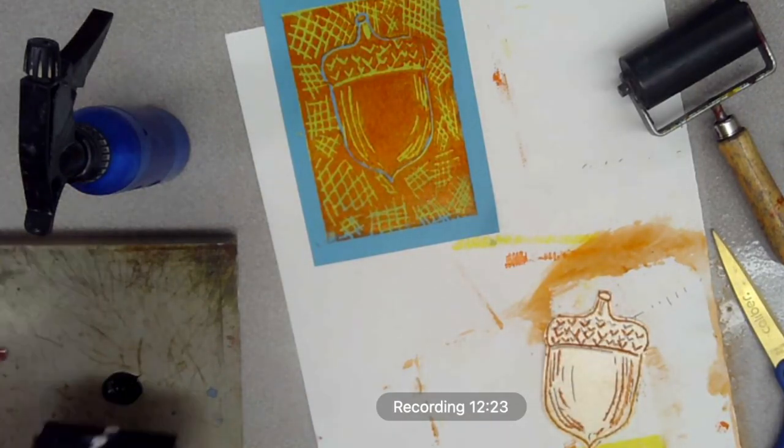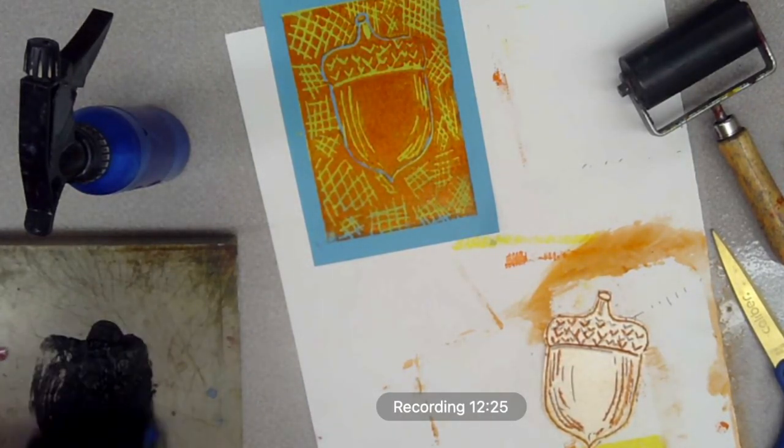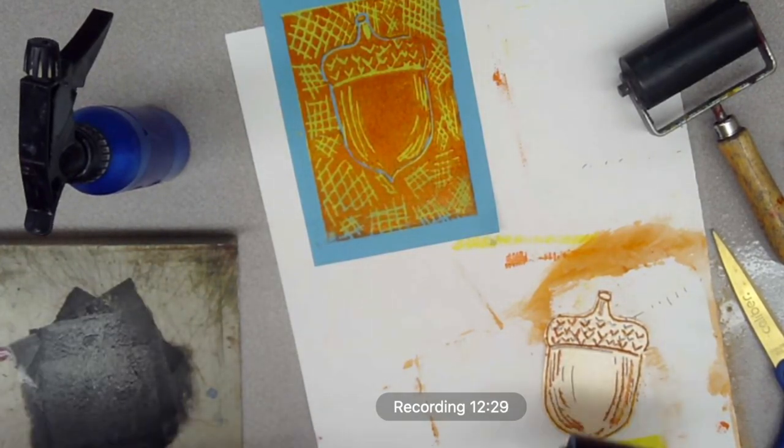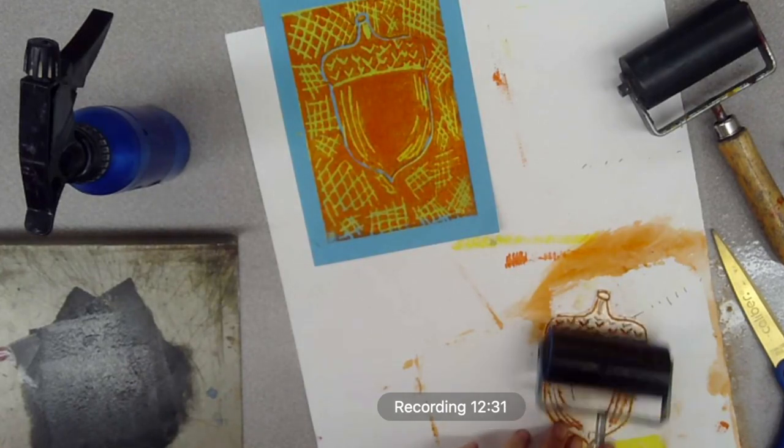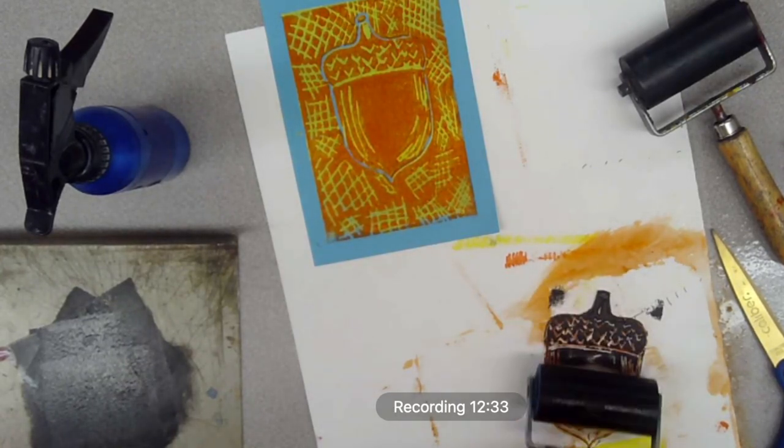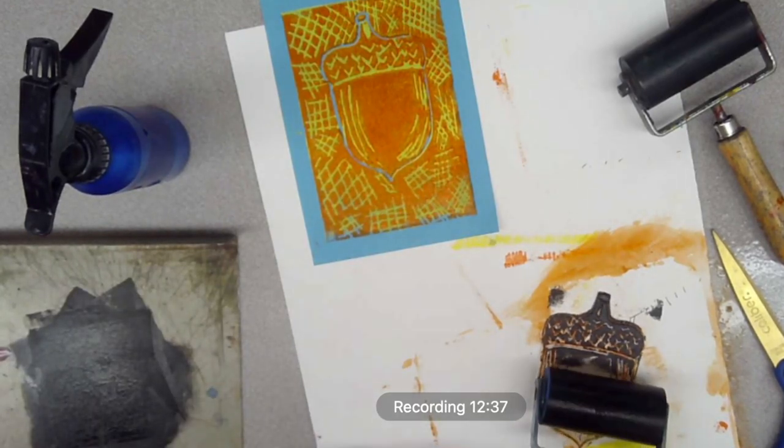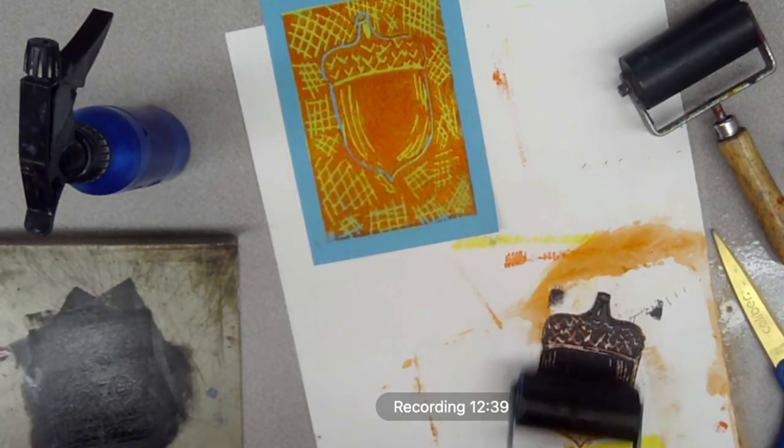My third and final color, you want this to be your darkest color of all of them. I chose black, you could use a blue, a violet, whatever. Do it on a clean bench hook, so you might have to clean yours. You're just going to roll directly on this little guy. You can probably know what's going to happen next.